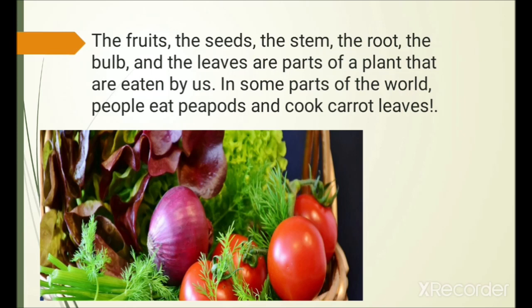The stem eaten by raw — potato. The root eaten by raw — beetroot, carrot. The bulb. The leaves — spinach, coriander. These are all the leaves eaten by raw.